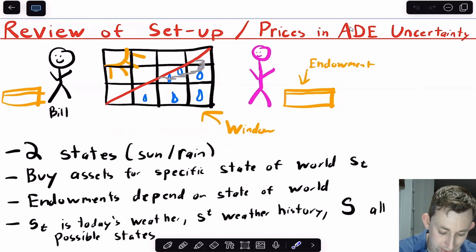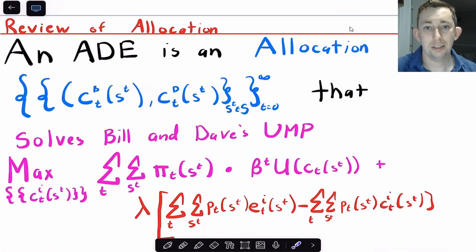And we said before that endowments also depend on the state of the world. And we had some notation where we had S sub T is today's weather, S superscript T is the history of weather up to that point, and big S is all the different possible states of the world and all the different event histories that could happen.